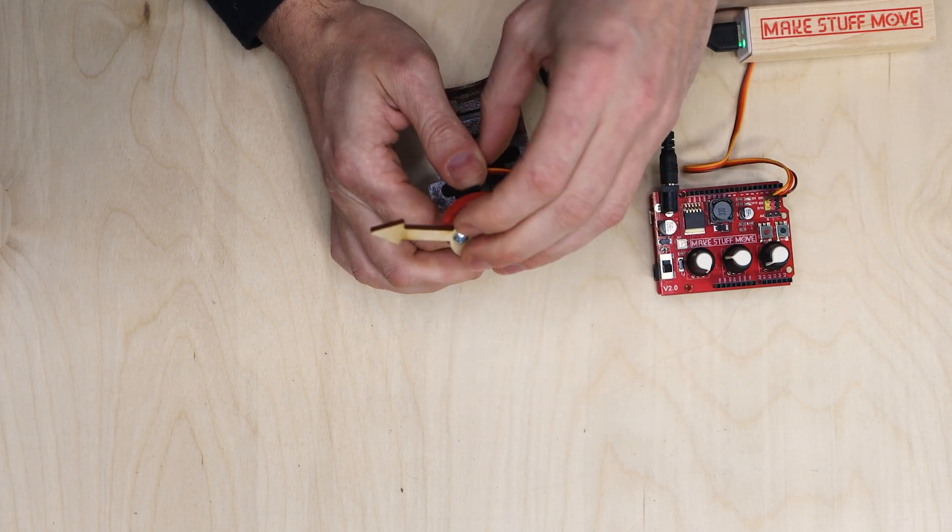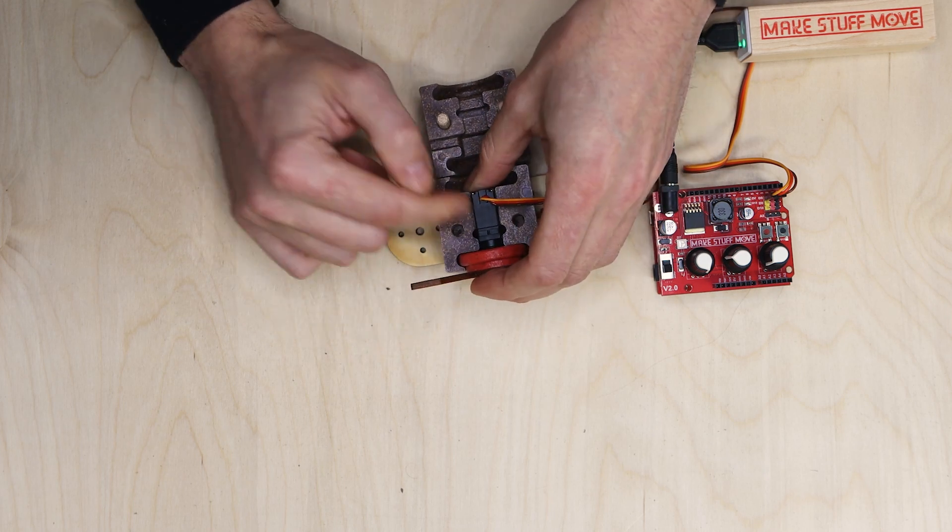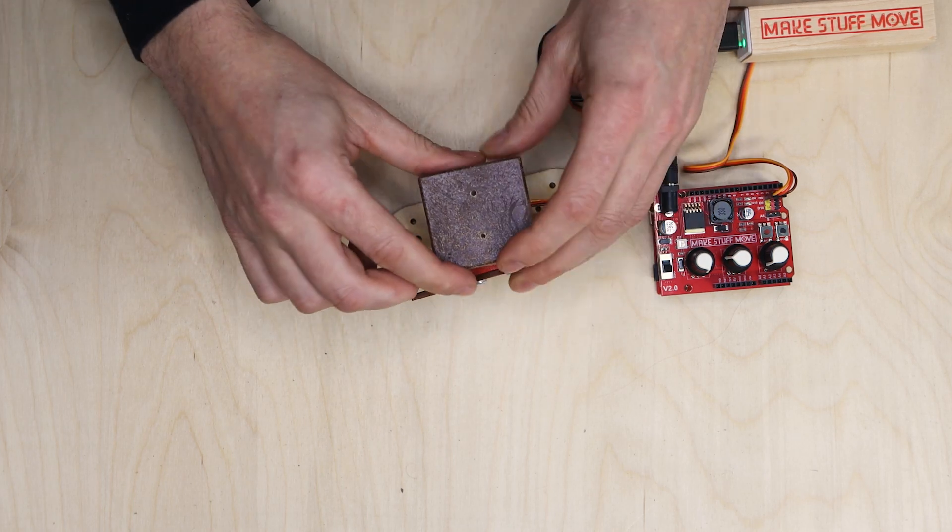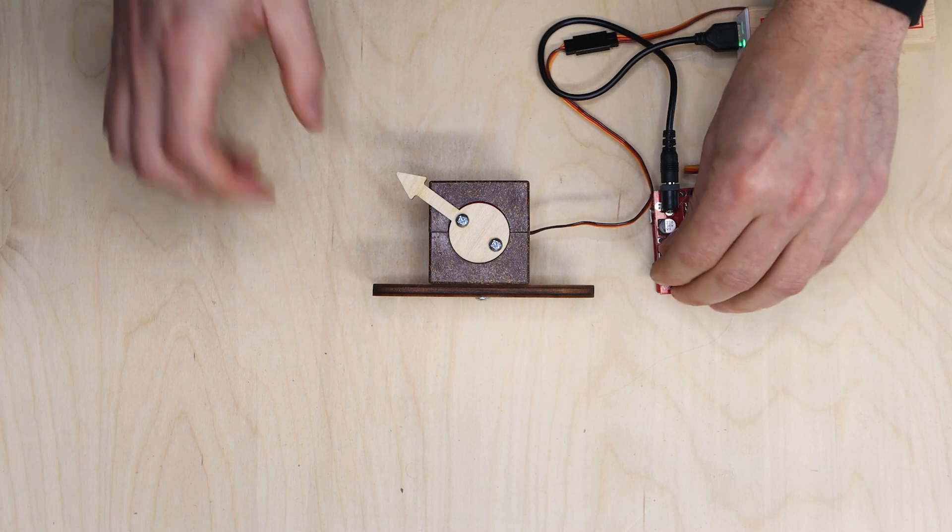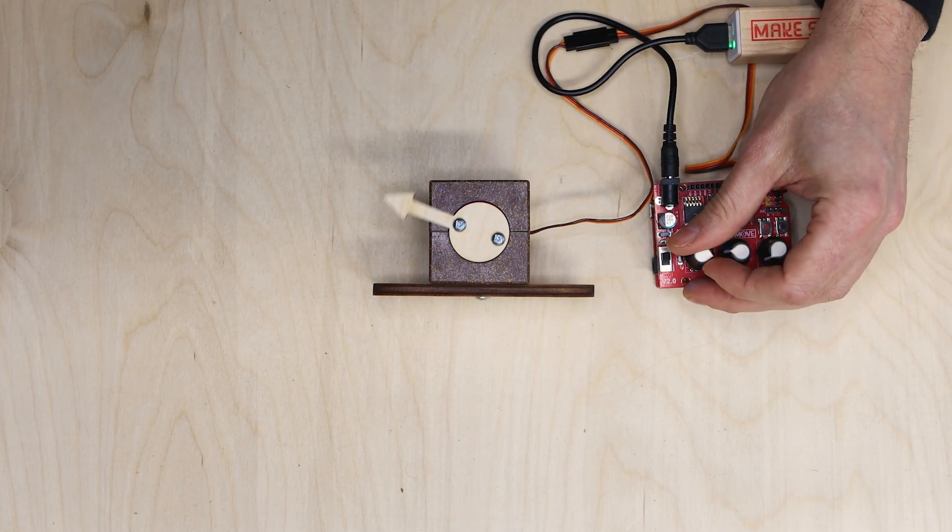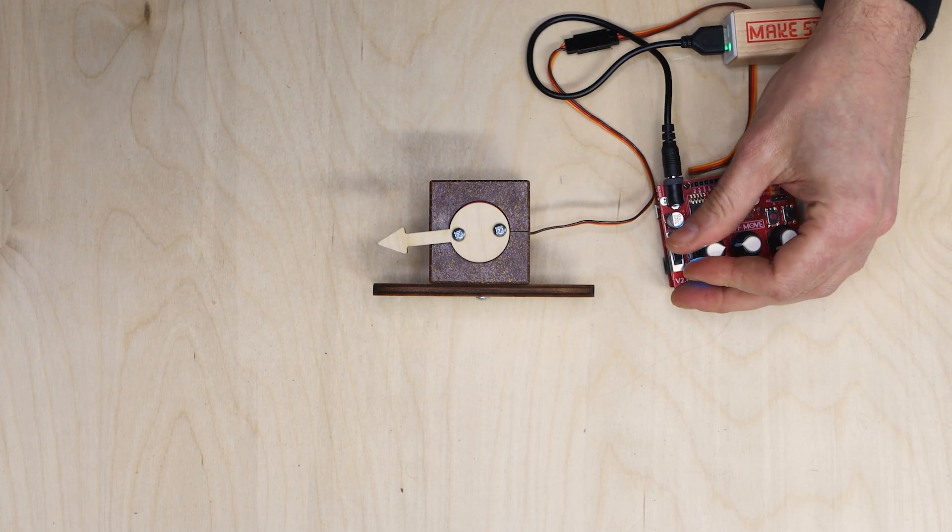Then I just put my disc back on there, fit it back into the servo sock. It'll only go in one way, so it won't close if it's not right, and turn it back on. So we'll see, now we're getting the swing that we are after.